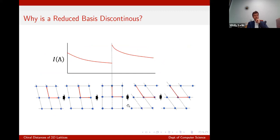This schematically illustrates why it's continuous. Why is a reduced basis discontinuous? Imagine we're using this reduction with obtuse angles — as I slowly deform a lattice, the invariant changes continuously until it hits a symmetric threshold, at which point it suddenly picks a different lattice basis, causing a discontinuous change.